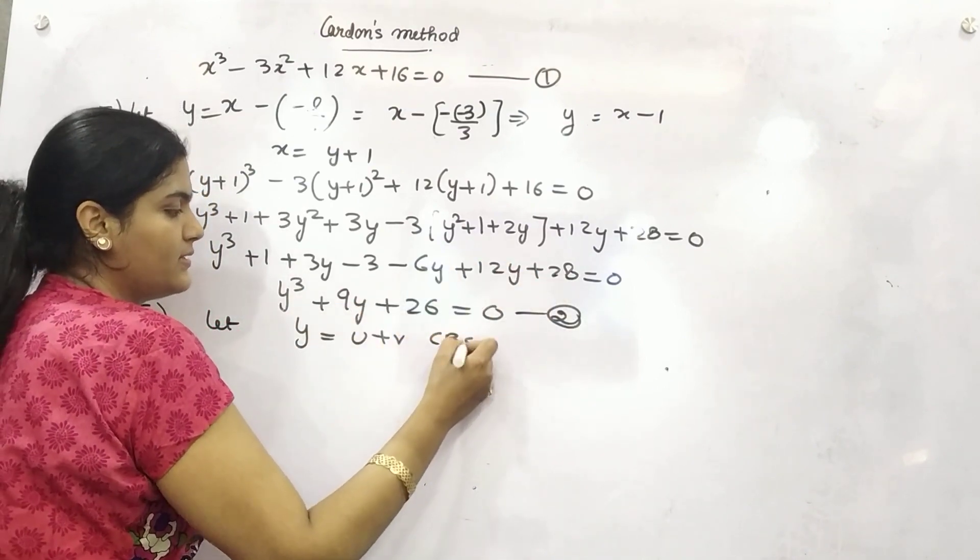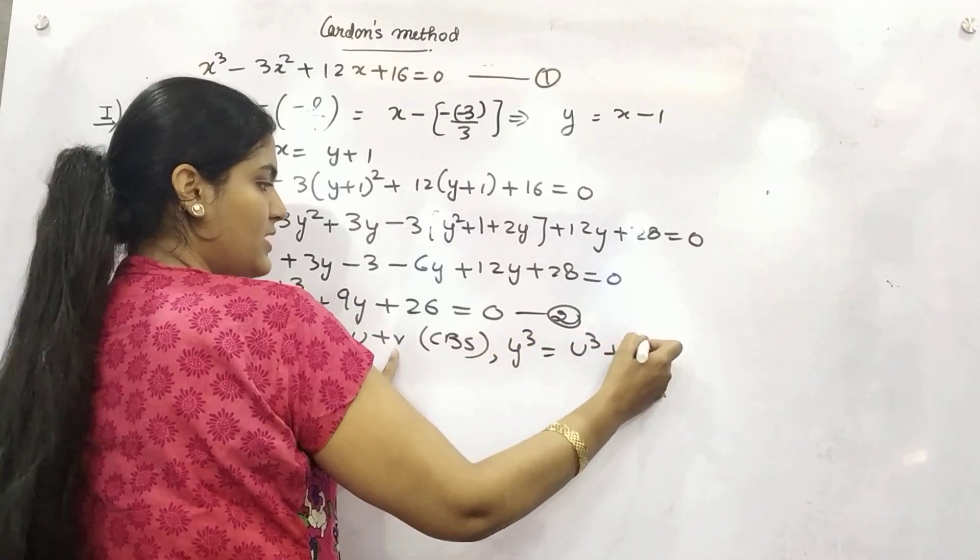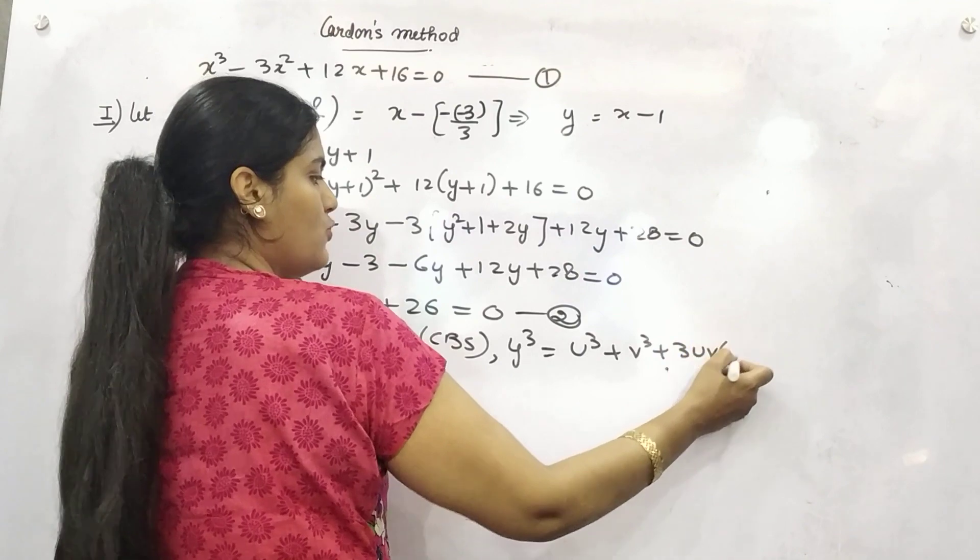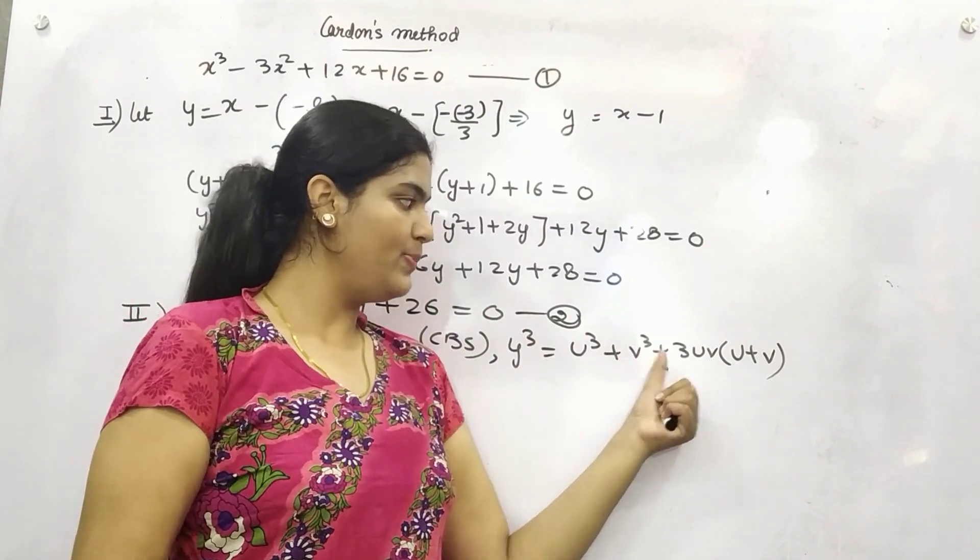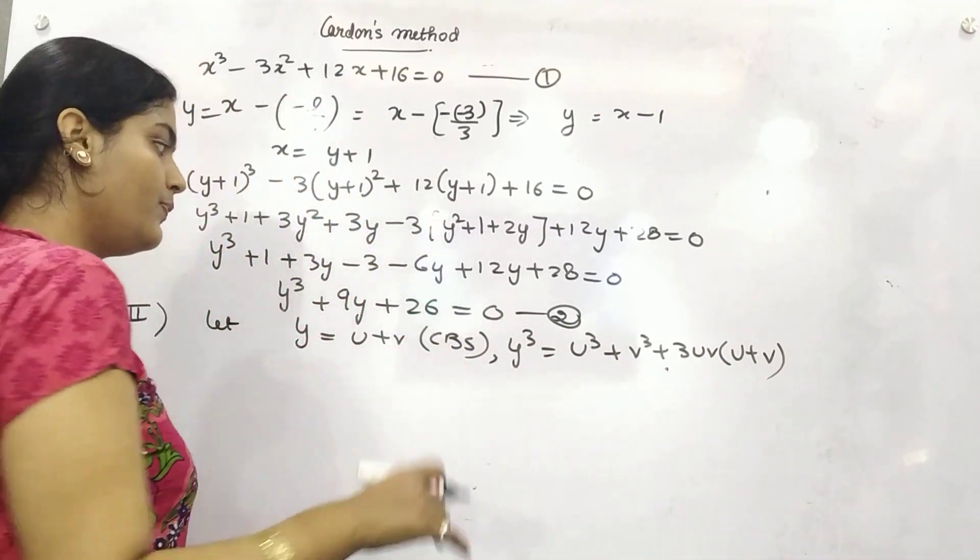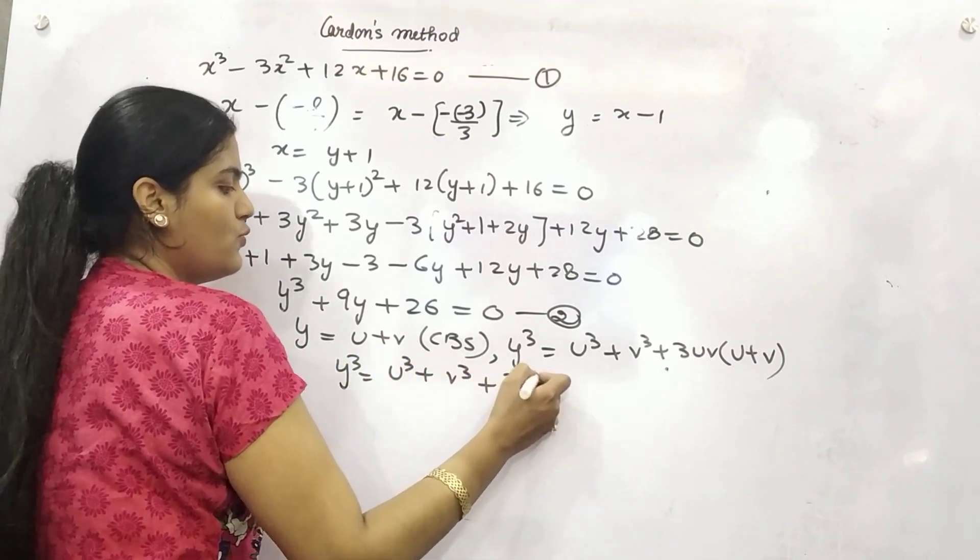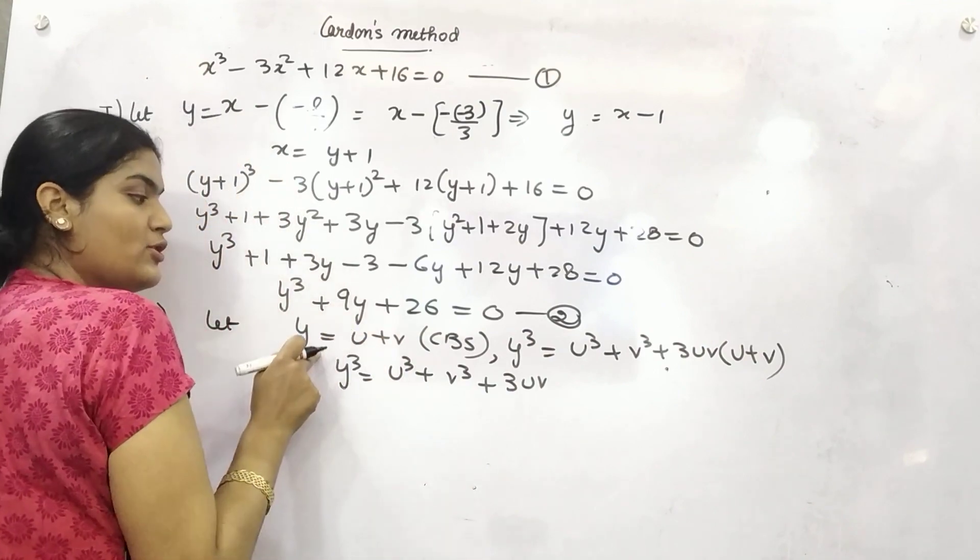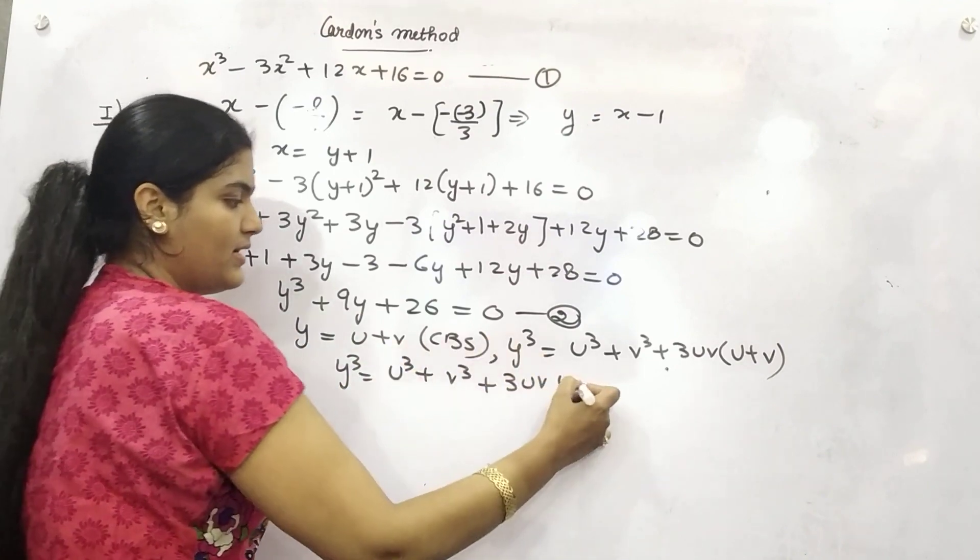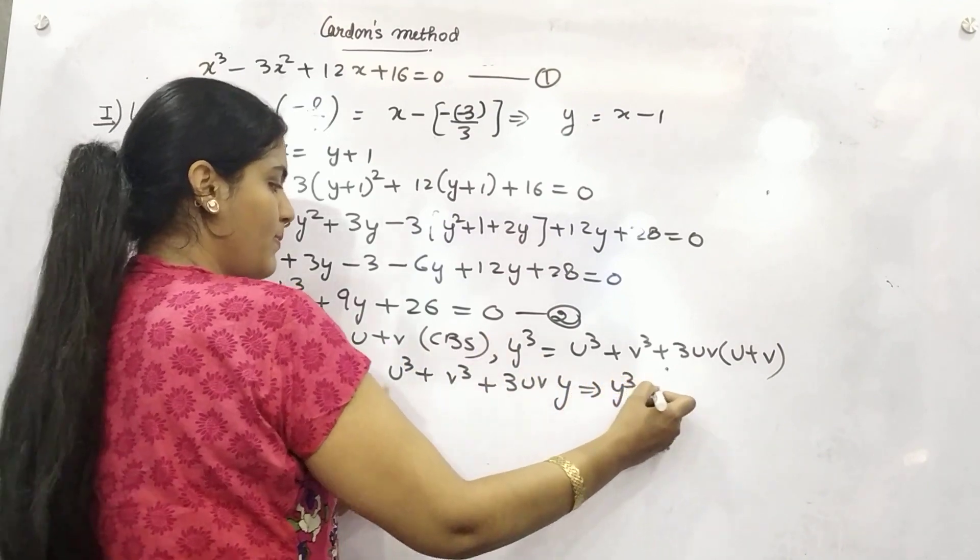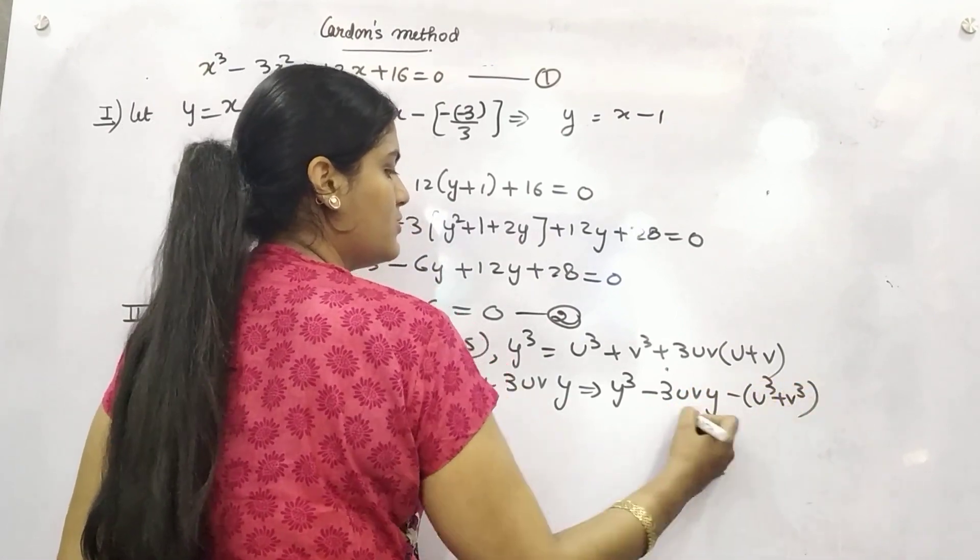If you are cubing both sides, what will you get? y cube is equal to u cube plus v cube plus 3uv(u plus v). Is that correct? Because a plus b whole cube is a cube plus b cube plus 3ab into a plus b. And you know that u cube plus v cube plus 3uv, this is your y. So if you take all the things into left hand side and make an equation.